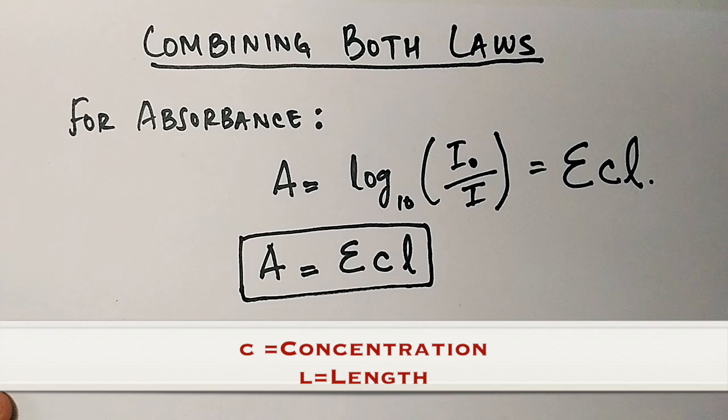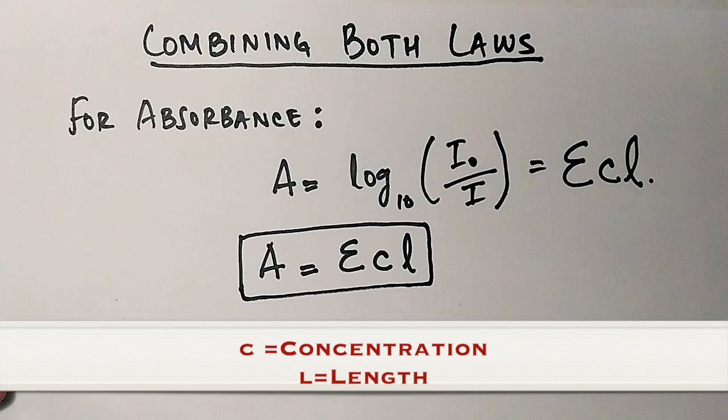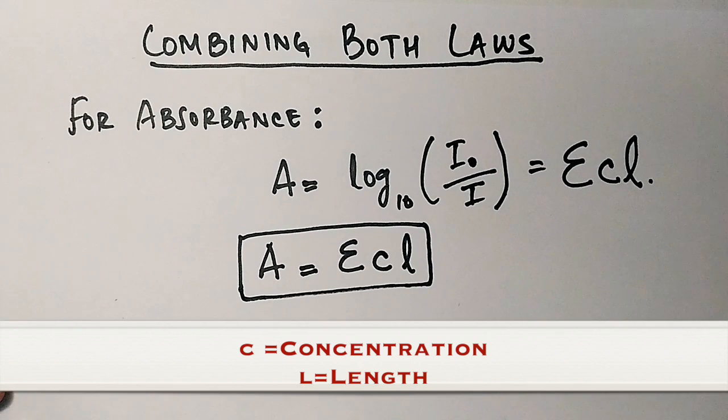So here we see in Beer-Lambert law both factors are crucial: the concentration of solution in which the light travels and the length of solution in which the light travels. When the concentration of solution is more, the absorbability will be more, and the same case with length—when length of the solution is more, the absorbability will be more.